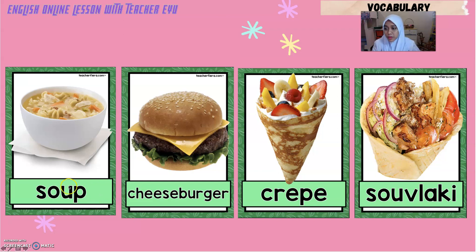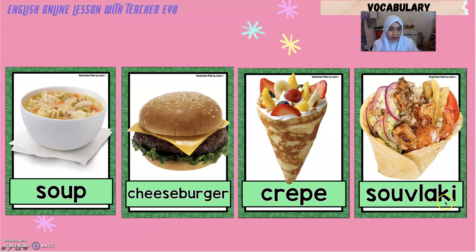Next vocabulary: 'soup.' In Malay we also say soup, but in English the spelling is S-O-U-P. Next we have 'cheeseburger' — it's a burger with cheese. Next: 'crab' — so this is crab. And the last one: 'souvlaki' — this is a picture of souvlaki.